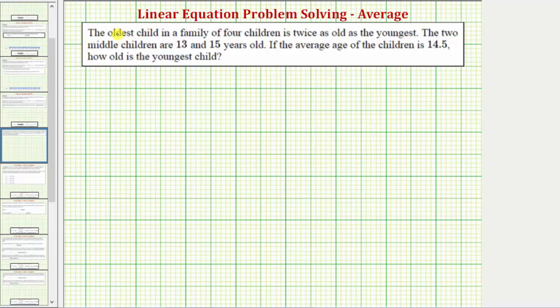Because the oldest child is twice as old as the youngest, to express this relationship, let's let x equal the age of the youngest child. And because the oldest child is twice as old as the youngest, 2x equals the age of the oldest child.